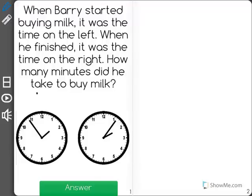When Barry started buying milk, it was the time on the left. When he finished, it was the time on the right. How many minutes did he take to buy milk?